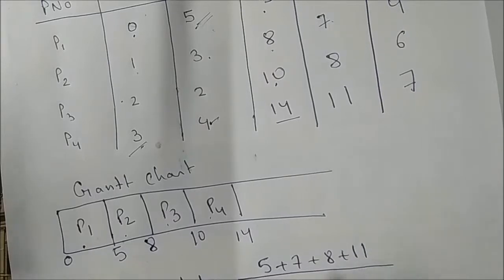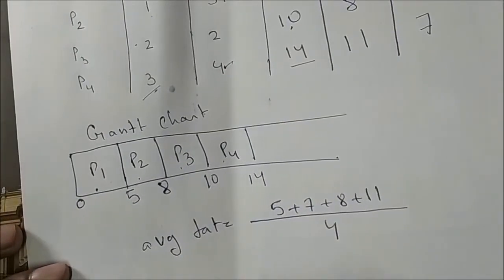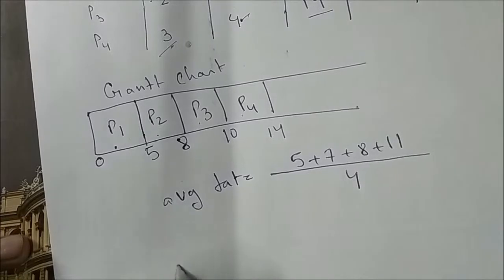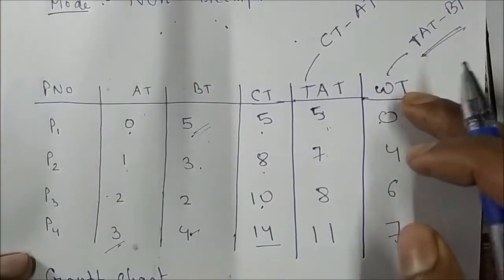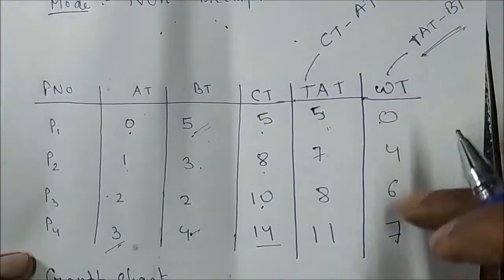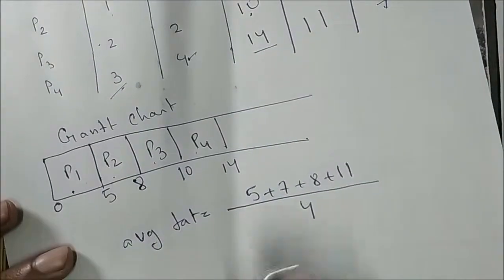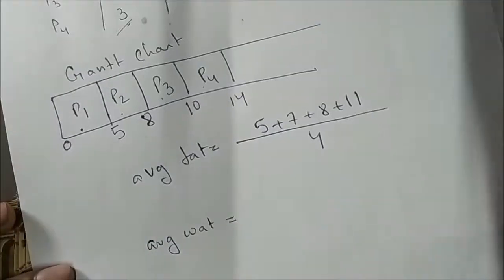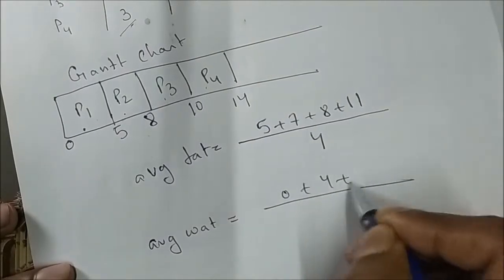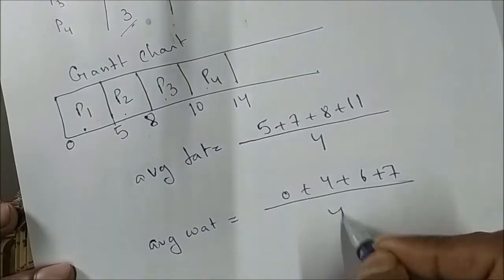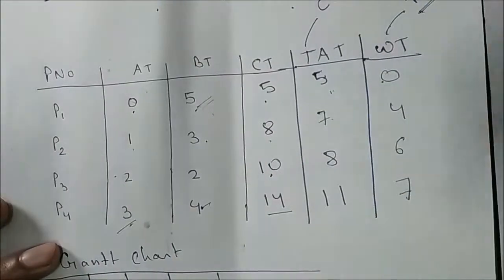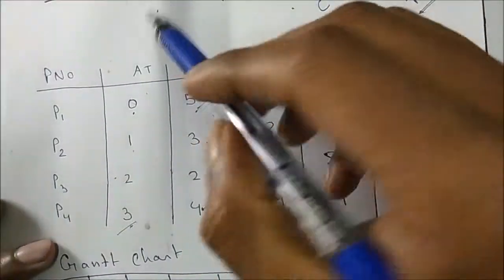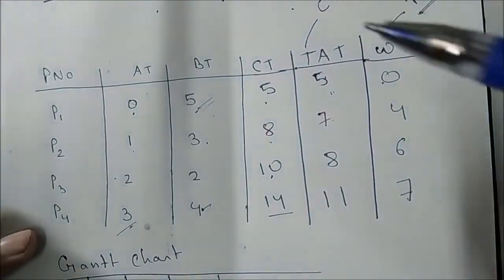Similarly for average waiting time: sum all four waiting times and divide by 4 — (0 + 4 + 6 + 7) / 4. Please calculate the result. This is how you easily calculate FCFS — First Come First Serve CPU scheduling algorithm.